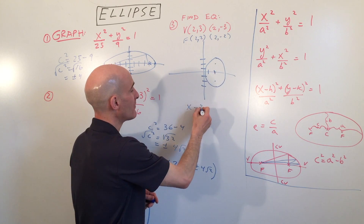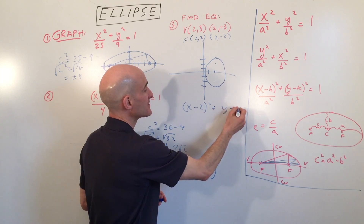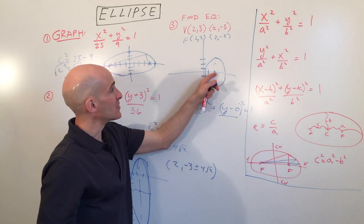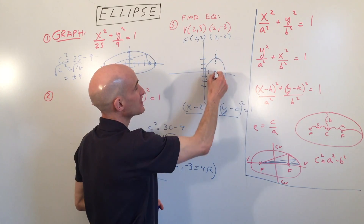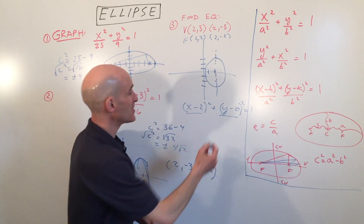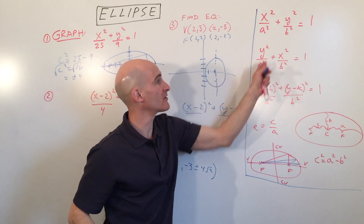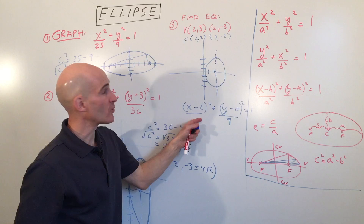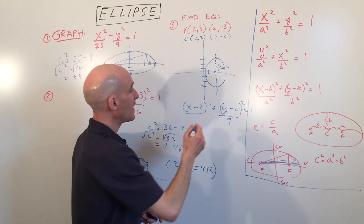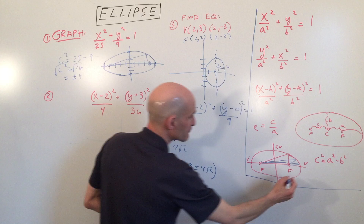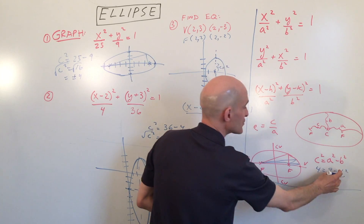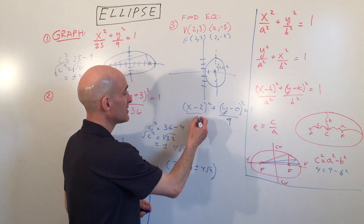The equation takes the form (x minus 2) squared over b squared plus y squared over a squared equals 1. Since the distance from the center to a vertex is 3, a squared equals 9. Since c equals 2 — the distance from center to foci — we use c squared equals a squared minus b squared: 4 equals 9 minus b squared, so b squared equals 5. The final equation has denominators 9 under y and 5 under x.